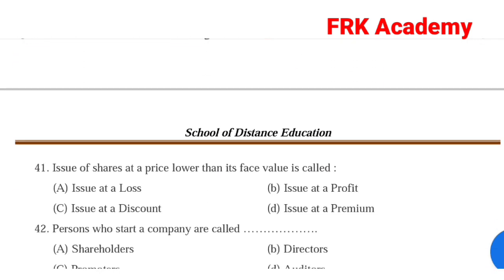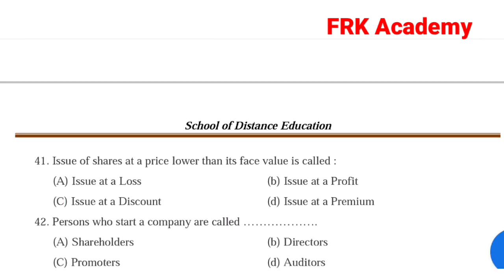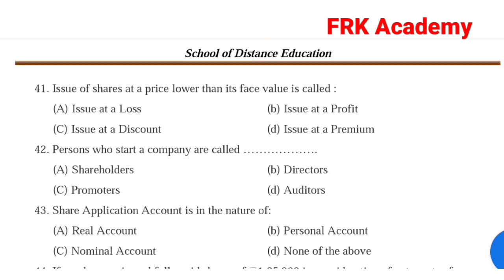Question 41: Issue of shares at a price lower than its face value is called issue at discount. Question 41: Persons who started a company are called. Answer: Option C, promoters. Promoters are the persons who start a company.